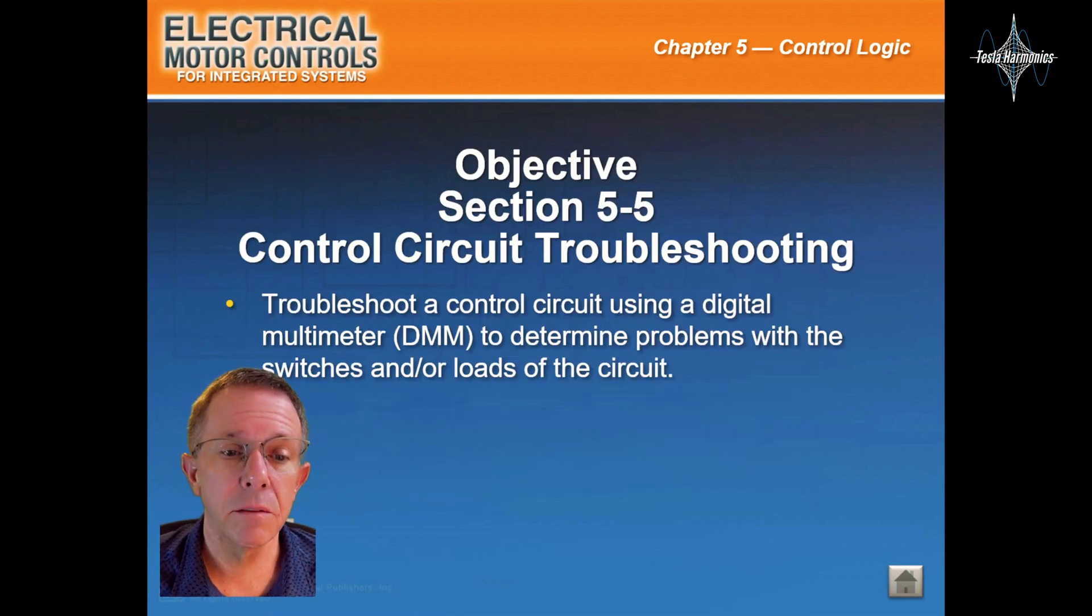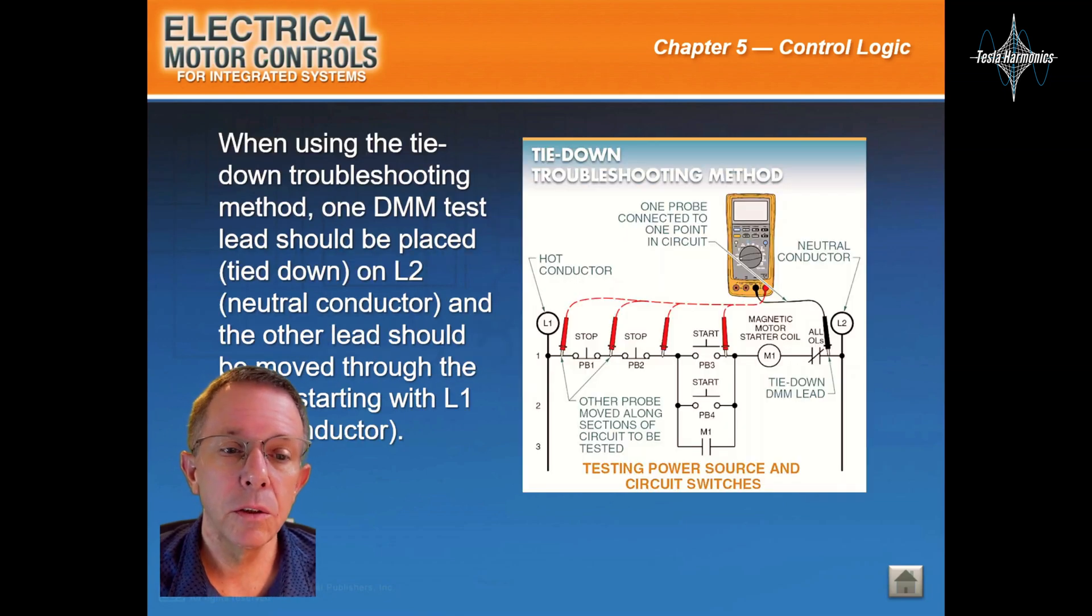This will be section 5-5, common circuit troubleshooting. When using the tie-down troubleshooting method, one digital multimeter test lead should be placed or tied down on line 2, or the neutral conductor, and the other lead should be moved through the circuit starting with line 1, the hot conductor.